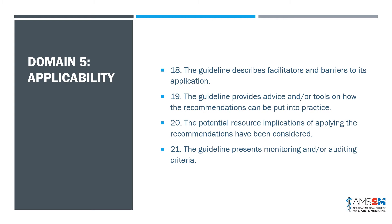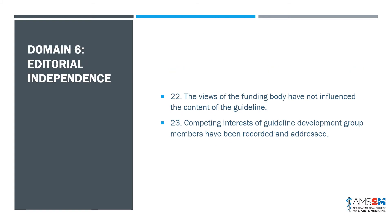Domain five is applicability. Is the guideline applicable to its population? Does it describe facilitators and barriers to its application? Does it provide advice or tools on how recommendations can be put into practice? Have potential resource implications been considered? And does the guideline present monitoring or auditing criteria? Domain six is the last domain — editorial independence. Have the views of the funding body influenced the content of the guideline? And item 23: have competing interests of guideline development group members been recorded and addressed? They're not saying you can't have competing interests, but that they have been clearly identified, recorded, and addressed.